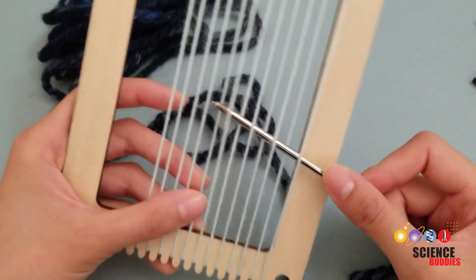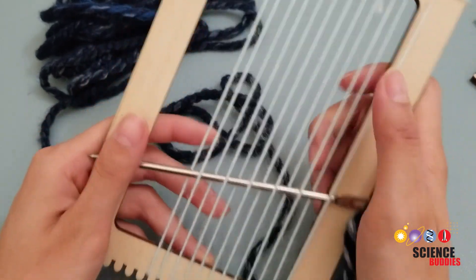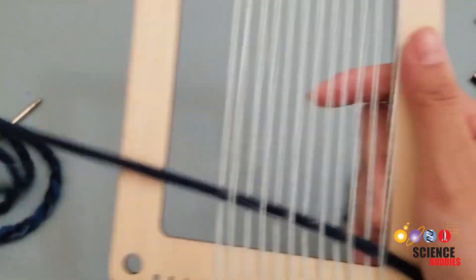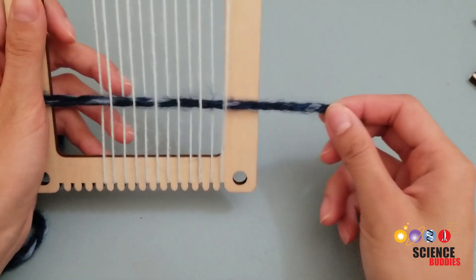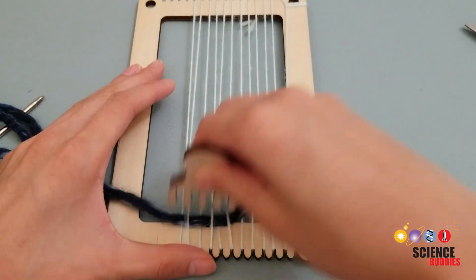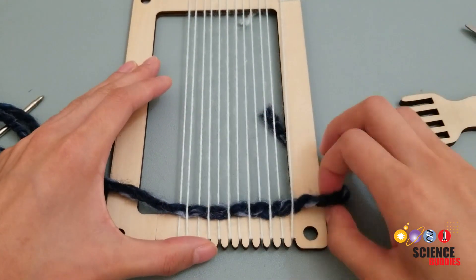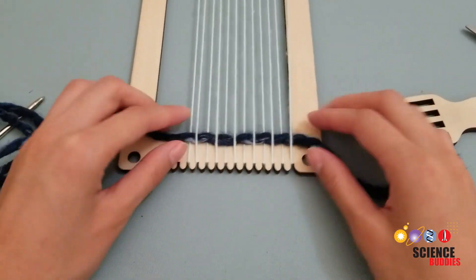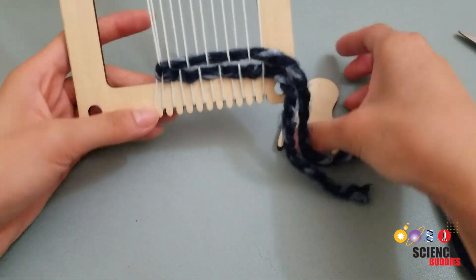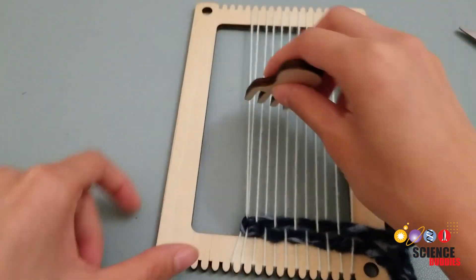So, here is the up and down sequence. Pull the yarn all the way through, but leave a 3-4 inch tail. Use your provided comb or fingers to push the yarn down after weaving a row. At the end of each row, add a little bit of slack to the yarn so it does not narrow inwards.